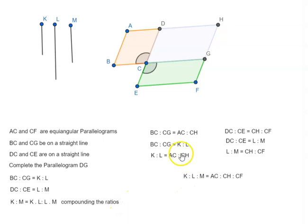And we can combine these two statements as K is to L is to M is equal to AC is to CH is to CF. And we can take the ratio of K and M. So K is to M is equal to AC is to CF.